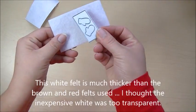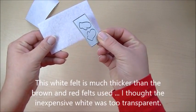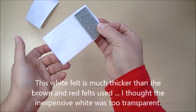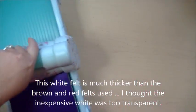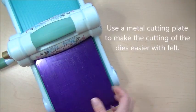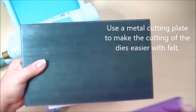Then I'm going to take my die, we're just using the one that covers two squares, so we get a pair of mittens. And my big shot machine. And I've used the metal plate with this one.